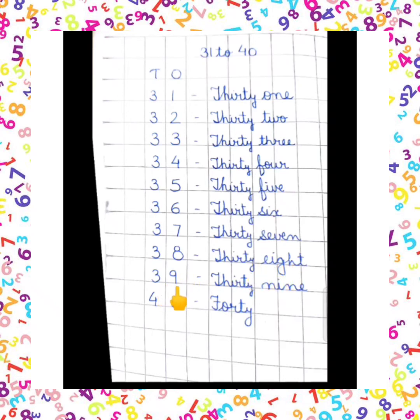39: THIRTY (T-H-I-R-T-Y) + NINE (N-I-N-E) = 39.